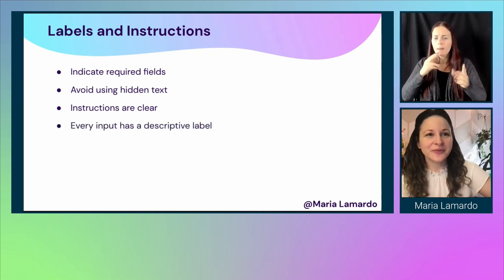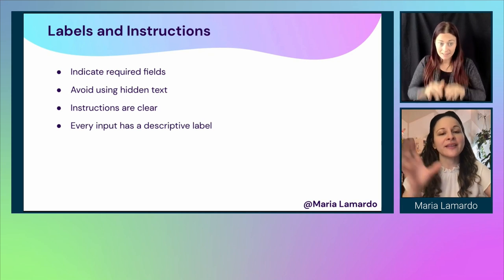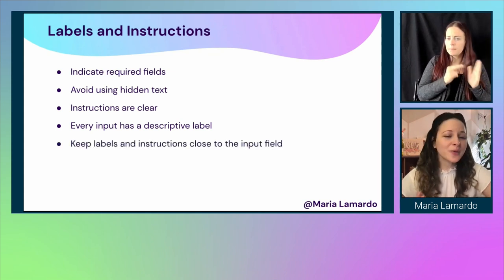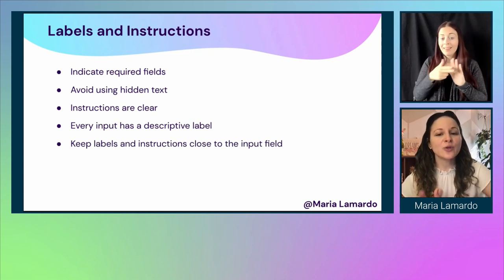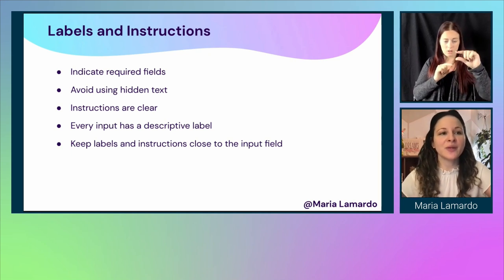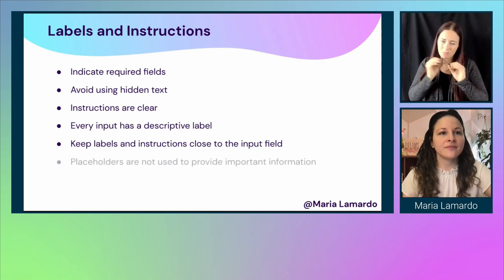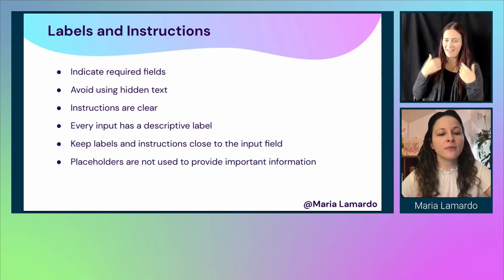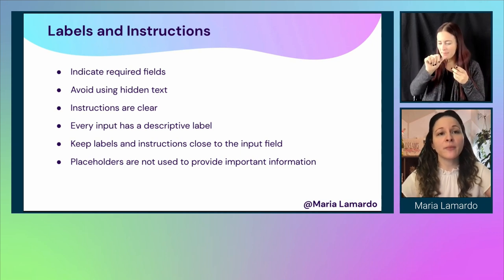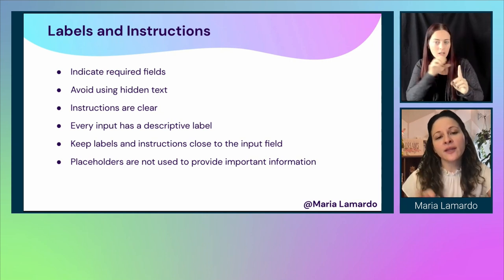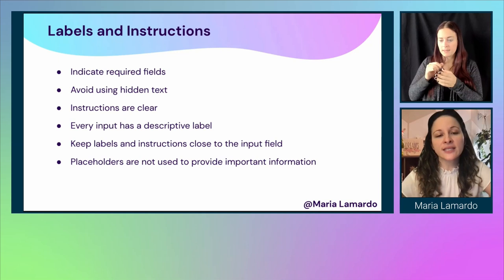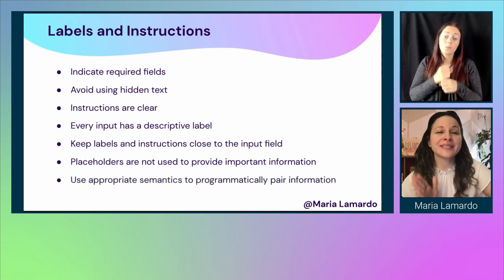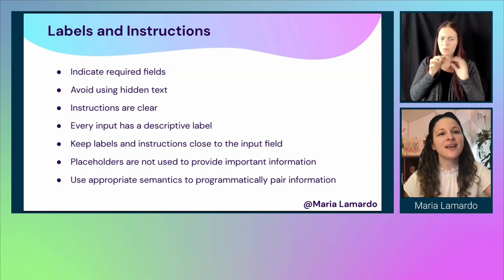We want to make sure our instructions are clear, using plain language that everyone can understand. Expand abbreviations on first use. Every input field should have a descriptive label, semantically paired for assistive technologies. Labels and instructions should stay close to the input field to reinforce that relationship. Don't use placeholders to provide important information — placeholders aren't recognized the same way by all assistive technologies, and they disappear as users type.